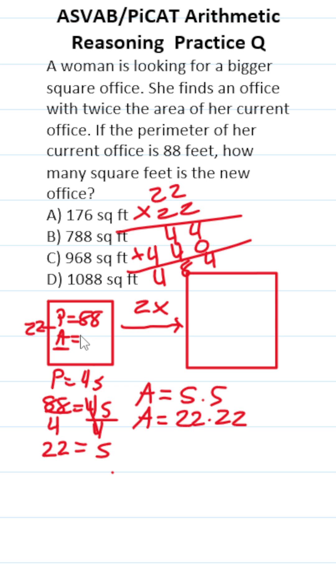So the area of this square office here is 484 square feet. We know that this has twice the area of that, so we'll do 484 times 2 to get the area of this office. 4 times 2 is 8, 8 times 2 is 16. Bring down a 6, carry a 1. 4 times 2 is 8 plus 1 is 9. So the area of this bigger office is 968 square feet, which is answer choice C.